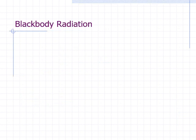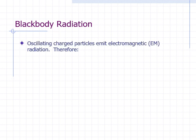What is blackbody radiation? First of all, we use the word radiation here to mean electromagnetic radiation, which is also often referred to as EM wave. EM is short for electromagnetic. An EM wave is produced when a charged particle oscillates. Since all atoms are made up of protons and electrons, which are charged particles, we expect all objects to emit or produce electromagnetic radiation.